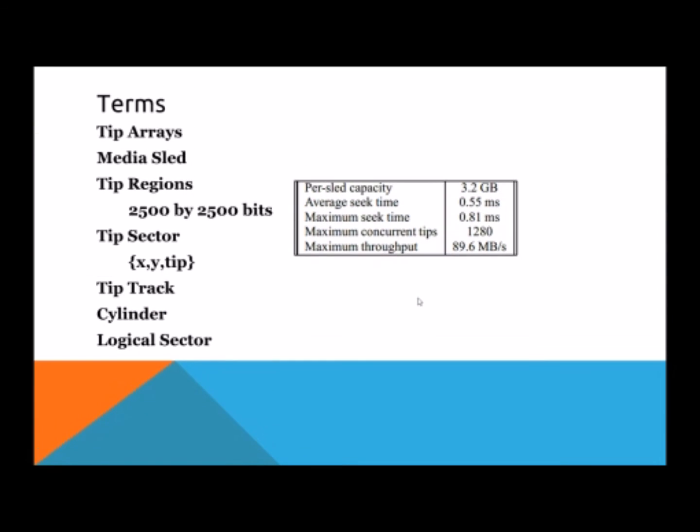Over on the right, we have a chart showing the basic sizes and speed of a MEMS architecture. For this one, it's very common. It has a 3.2 gigabyte slide capacity. If you look at the seek times, the average is only 0.55 milliseconds. The maximum is 0.81. This MEMS has 1,280 concurrent tips, which means it can be doing 1,280 reads at the exact same time. That is a lot of parallelism, which causes the maximum throughput of this MEMS architecture to be 89.6 megabytes per second. That is fast.